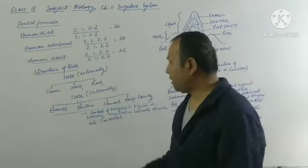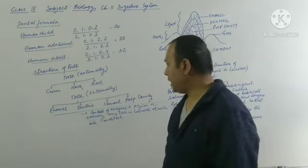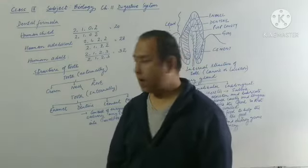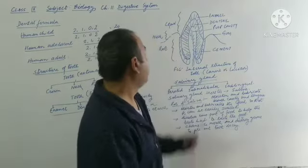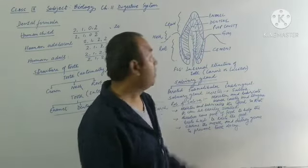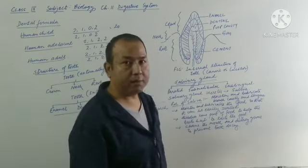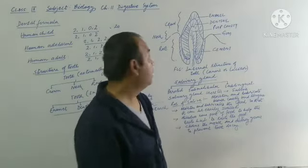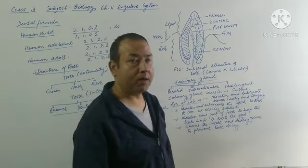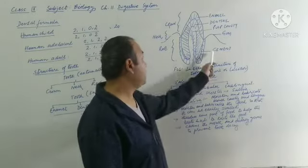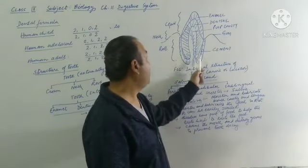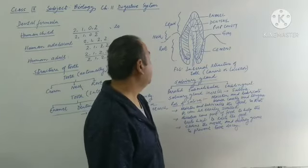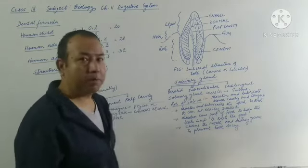Internally, the tooth can be divided into four different parts: enamel, dentine, cement, and pulp cavity. Enamel is considered to be the hardest substance in the human body — it is the whitish outer layer of the crown. Inner to the enamel is another layer called dentine. Inner to the dentine is a cavity called the pulp cavity, which is highly supplied with blood capillaries and lymph. Cement is the structure that fixes the tooth firmly inside the socket of the jaw.